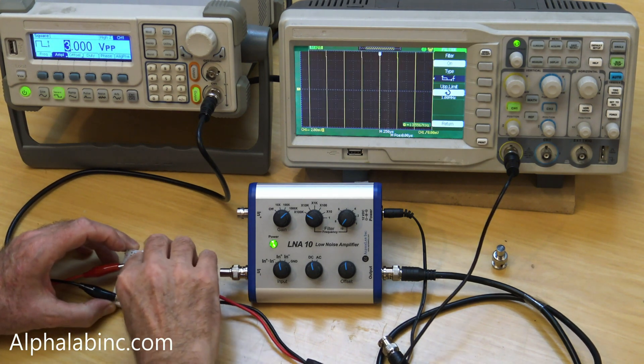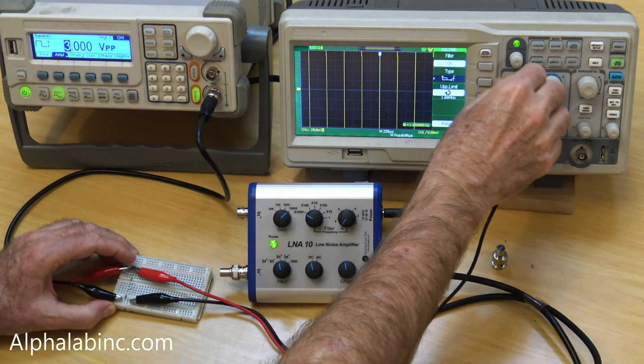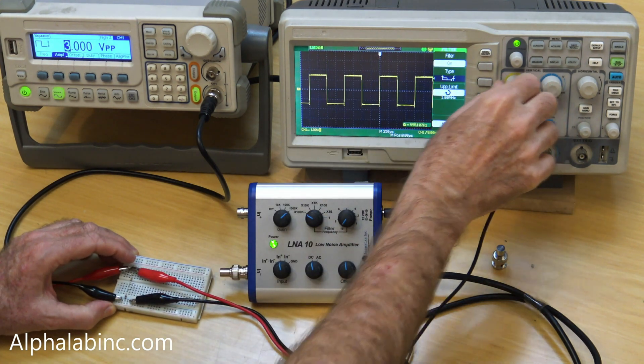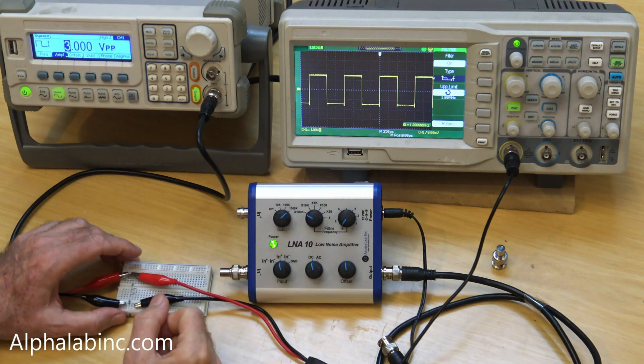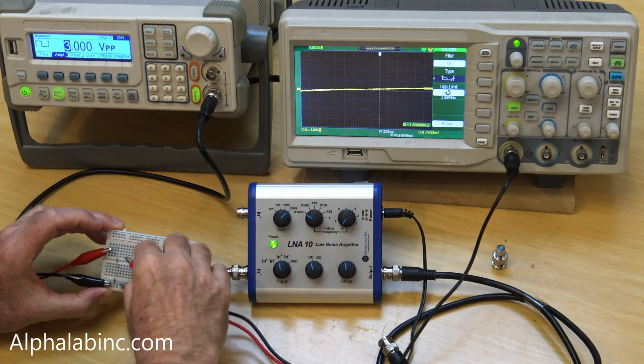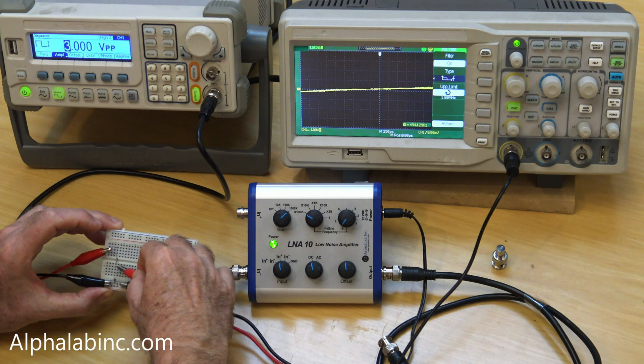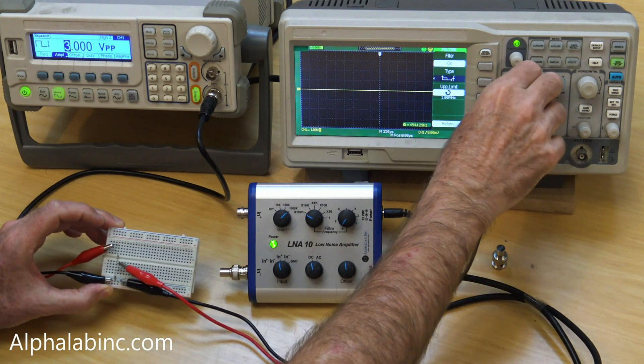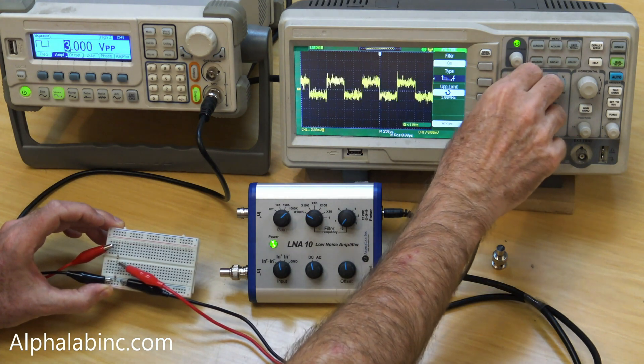Looking at the 3 volt output, I'll switch the oscilloscope gain to 1 volt per division, so we can see a clean square wave. Now I'll divide that by 1000 to make a 3 millivolt peak to peak square wave, and I'll switch the oscilloscope back to its maximum gain.